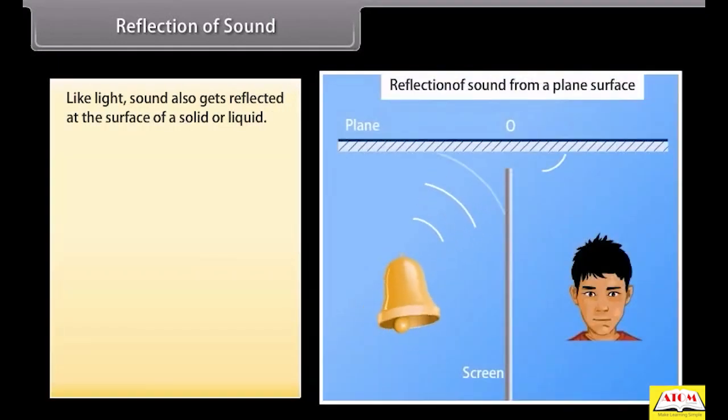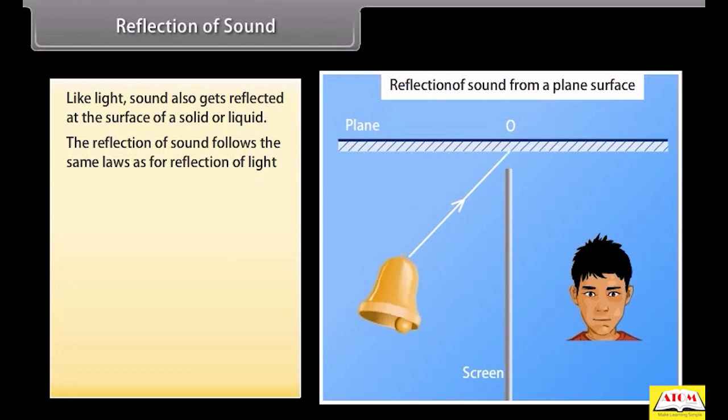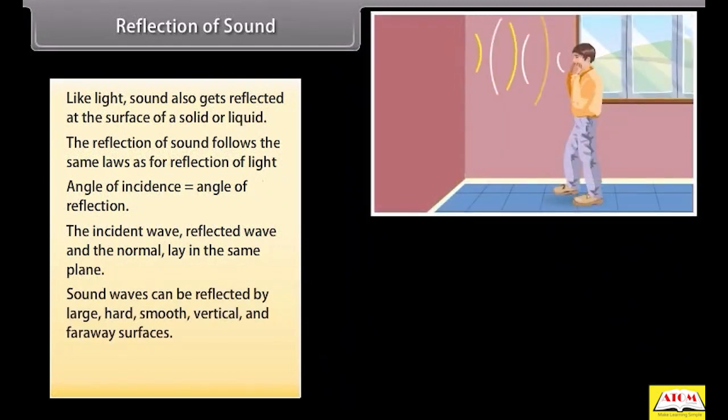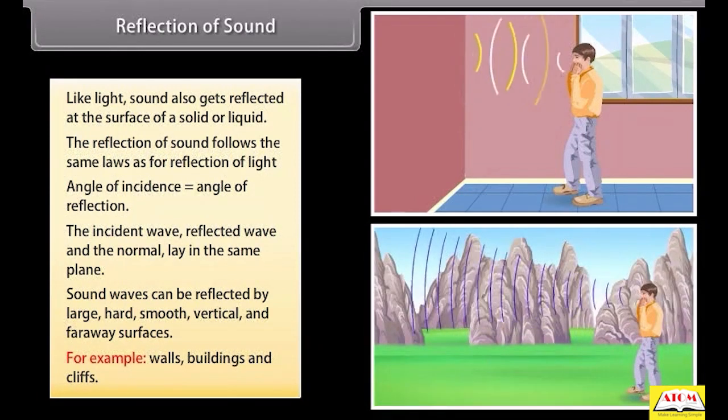Reflection of sound. Like light, sound also gets reflected at the surface of a solid or liquid. The reflection of sound follows the same laws as for reflection of light. Angle of incidence is equal to the angle of reflection. The incident wave, reflected wave, and the normal lie in the same plane. Sound waves can be reflected by large, hard, smooth, vertical, and far away surfaces. Examples: walls, buildings, and cliffs.